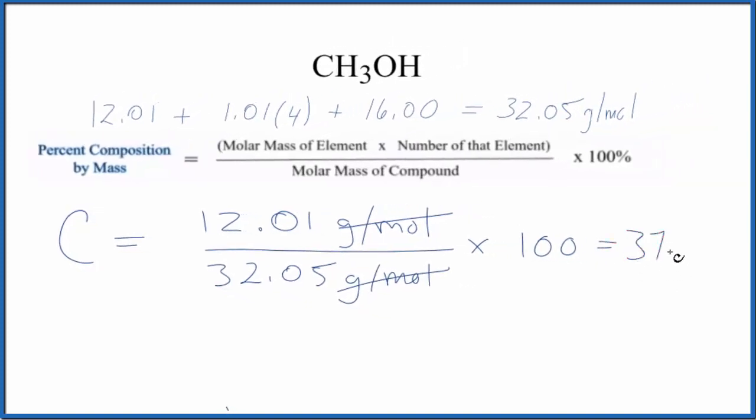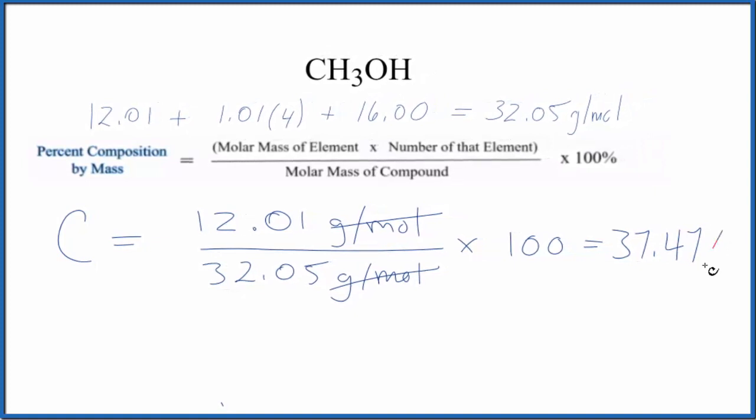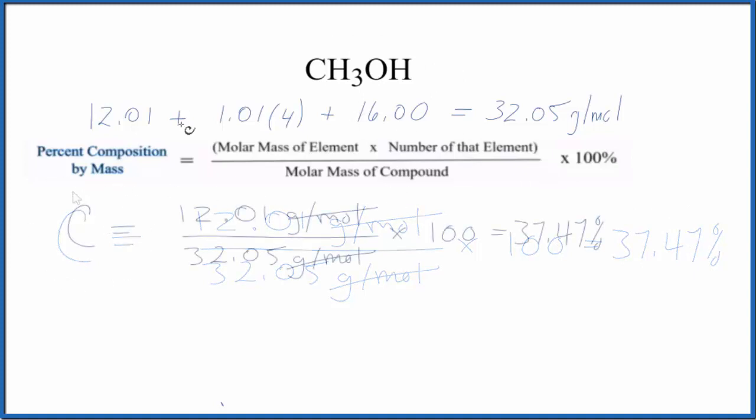If we had a mass of methanol, 37.47% of it would be the mass of the carbon.